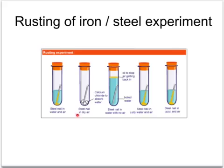The second picture shows the nail in contact with the air, but with a drying agent. The drying agent, calcium chloride, is used to absorb any water vapour inside the tube. So the second tube is in dry air — it has no water present.